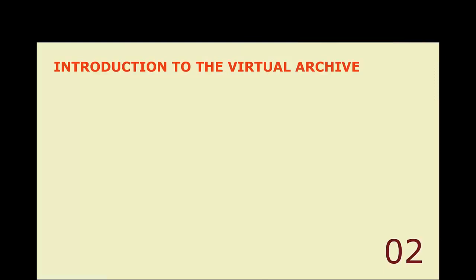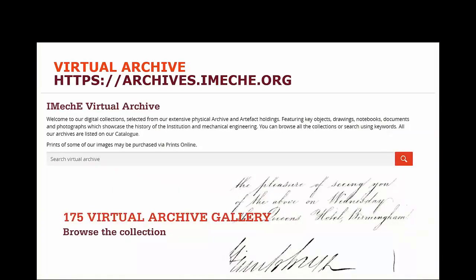Our virtual archive is an online portal for some of our digital collections. It features a selection of key objects, drawings, notebooks, documents and photographs, which provide a perspective on the history of the institution and the history of mechanical engineering. The virtual archive can be accessed either by going to archives.imechE.org or via the IMechE homepage.